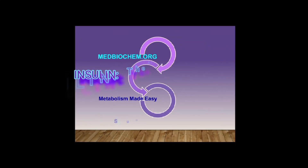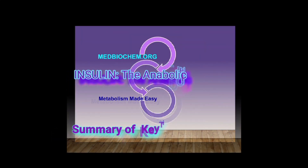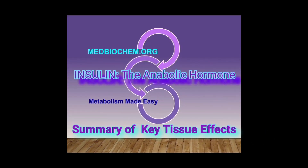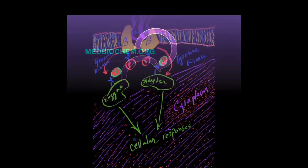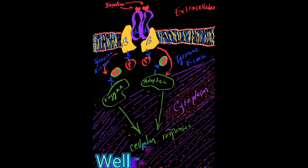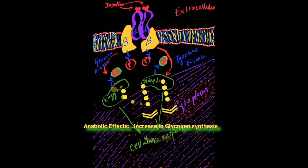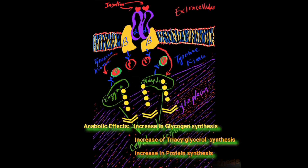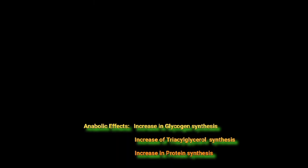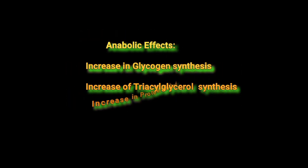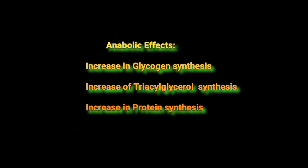In the well-fed state, a rise in plasma glucose elicits the release of insulin, which will then activate the insulin receptors in many tissues. Activation of the insulin receptor elicits a plethora of intracellular responses including three anabolic responses: synthesis of glycogen from glucose, synthesis of triacylglycerol from fatty acids, and synthesis of proteins from amino acids.